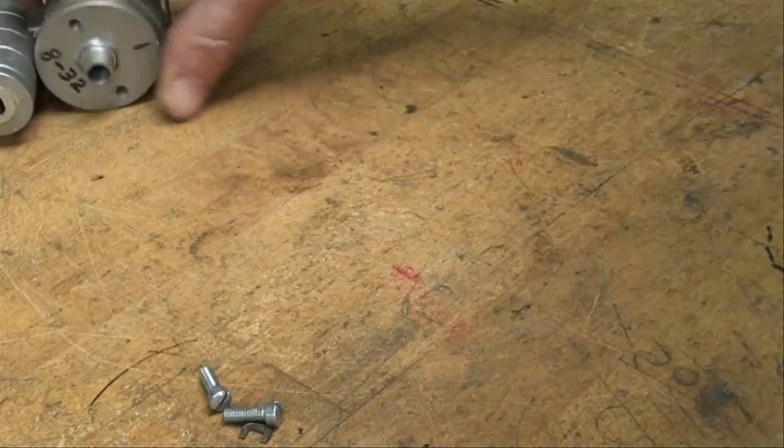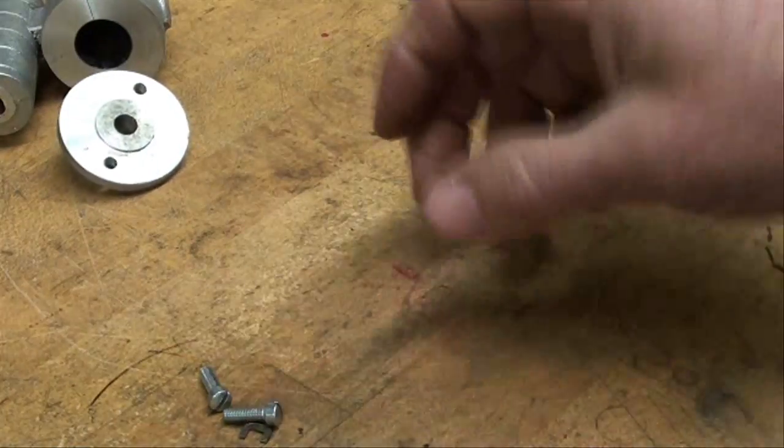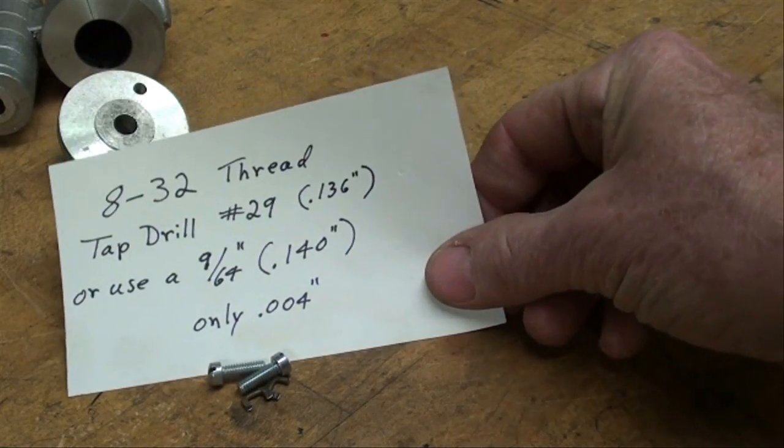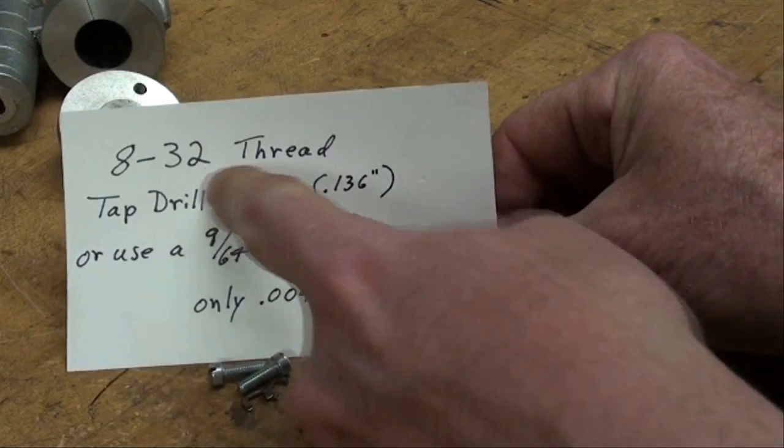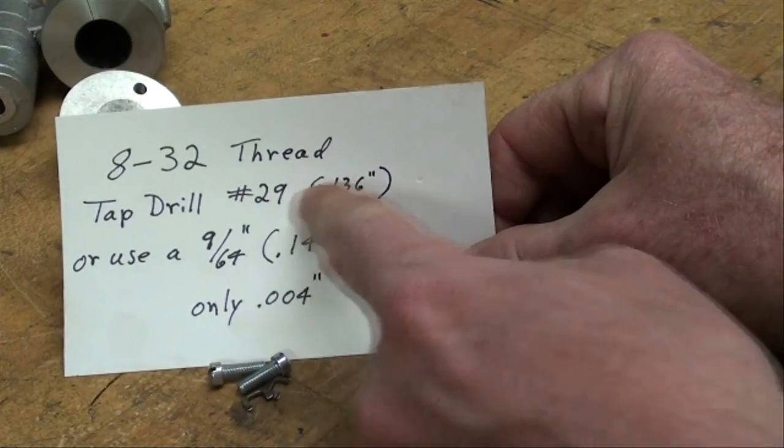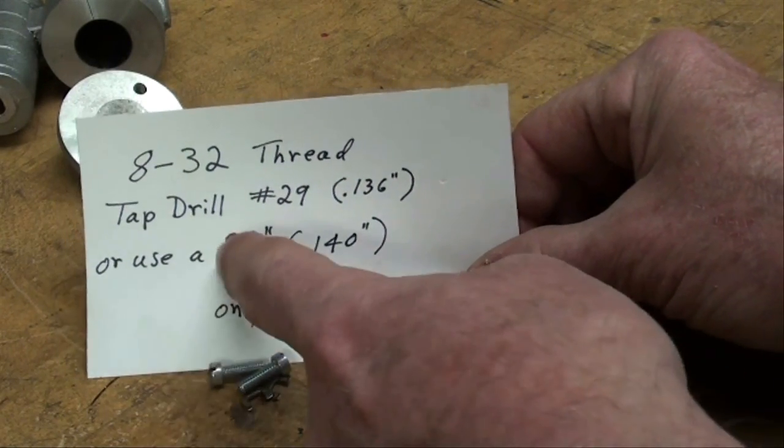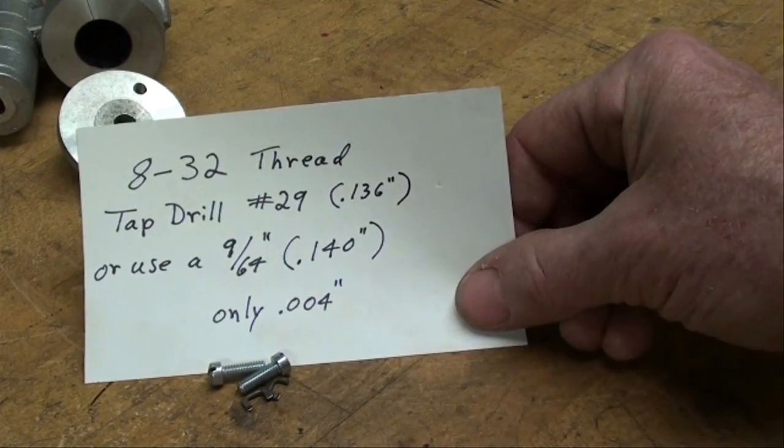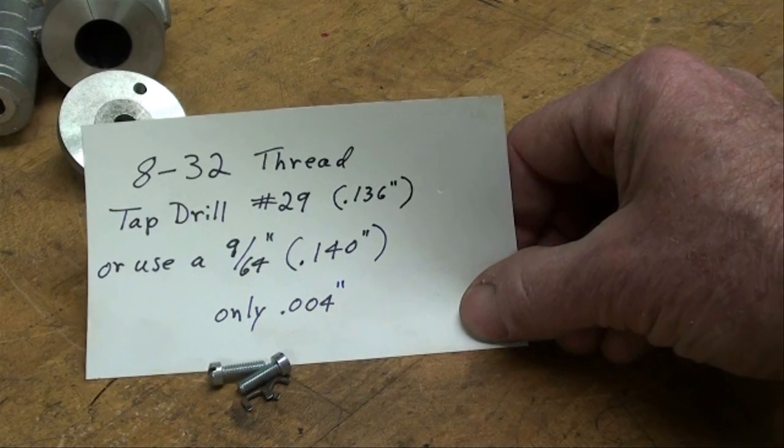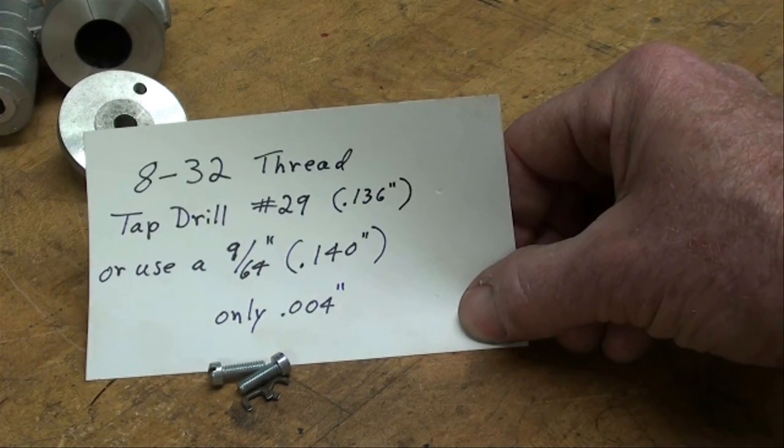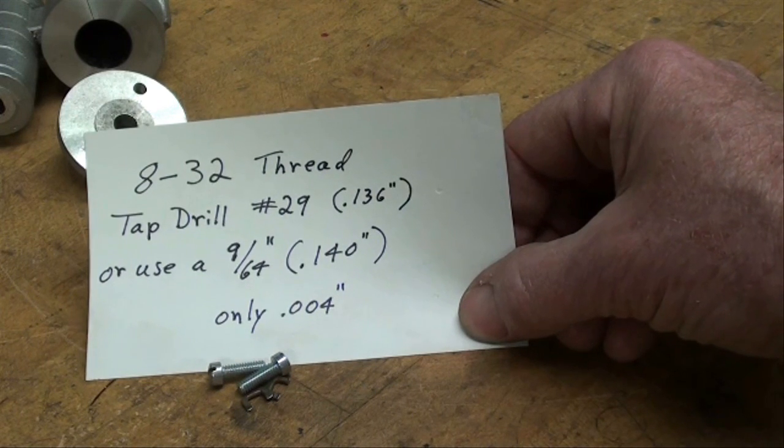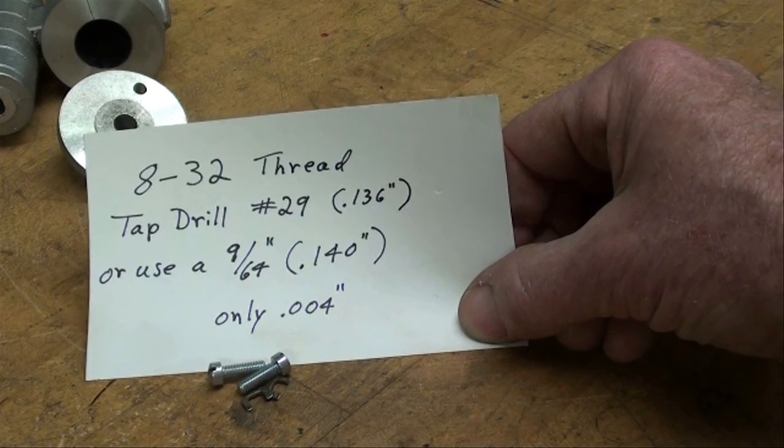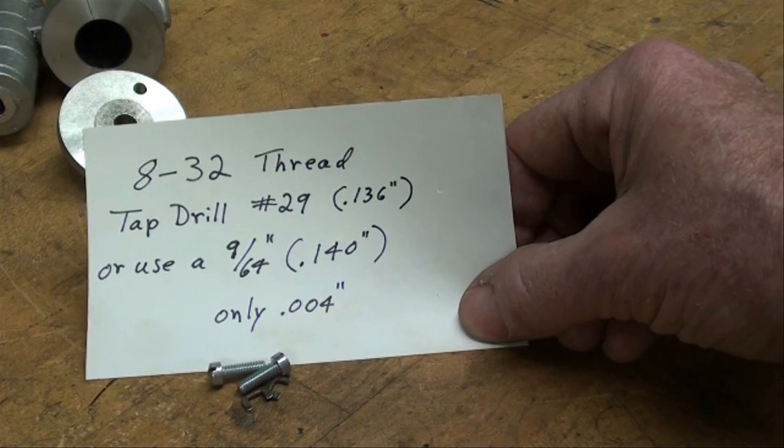Now, the 8-32 thread requires a tap drill of number 29, which is 136 thousandths, but in fact I'll use a 9/64 which is 140 thousandths. It's four thousandths over and that's close enough. If anything, that's going to give me a thread that isn't quite as deep, but there's also a little less chance of breaking a tap. So never go smaller when you're selecting a tap drill, but you can go slightly larger on some of them.